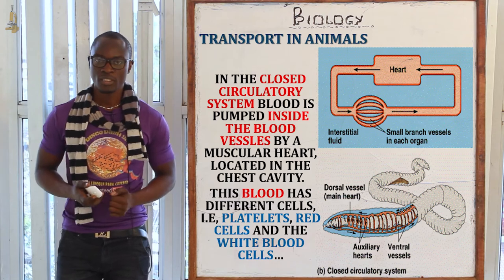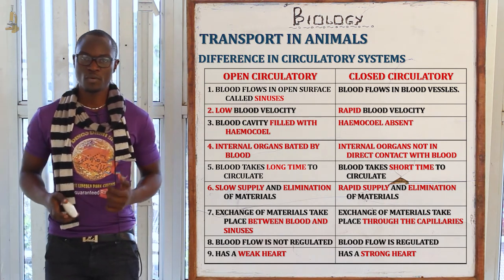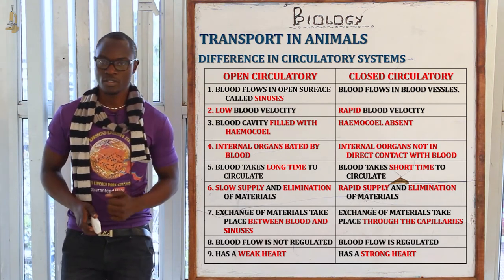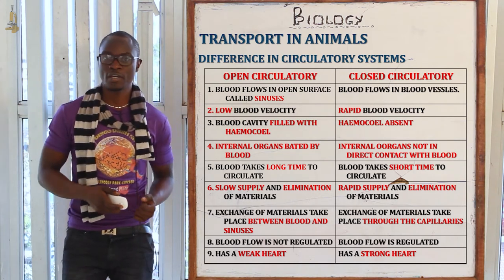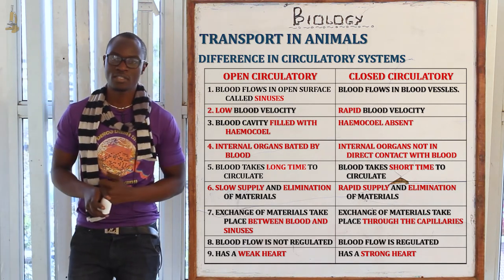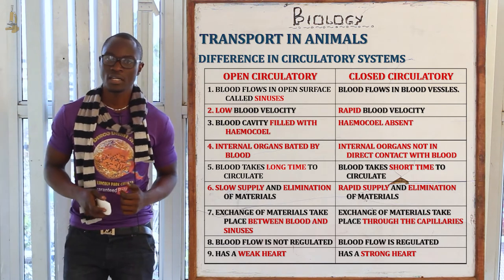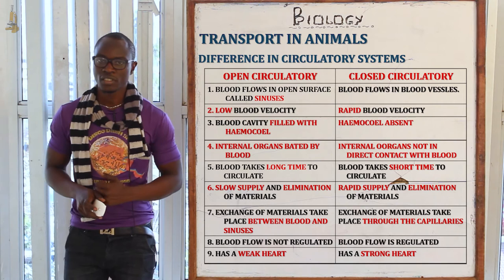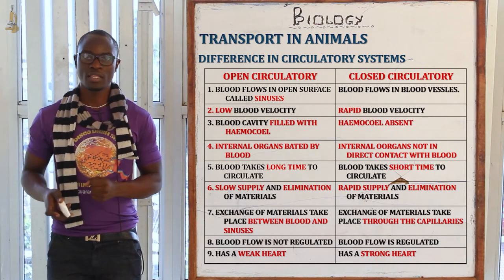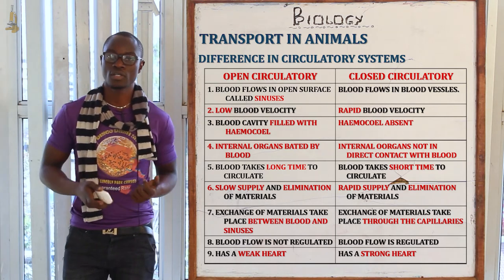Let's look at the differences between the open and closed circulatory systems. In the open circulatory system, blood flows in open surfaces called sinuses, while in the closed circulatory system blood flows in blood vessels. In the open circulatory system the velocity of blood is very low, while in the closed circulatory system the velocity of blood is very high. The haemocoel is present in the open circulatory system but absent in the closed. In the open system, all internal organs are submerged or floating in the blood, while in the closed system the organs are not in direct contact with the blood.